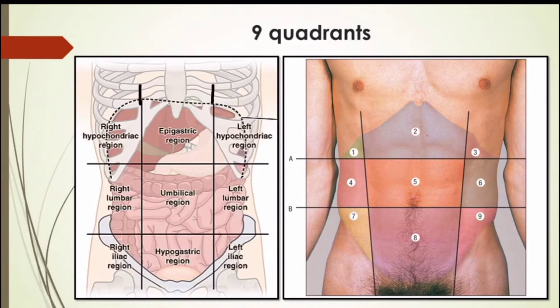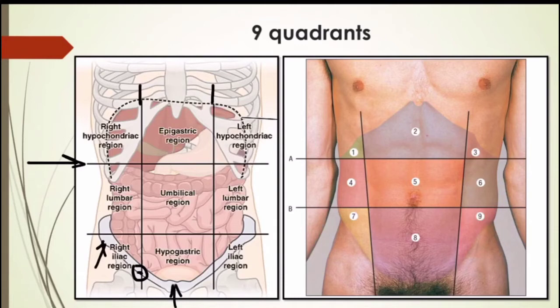The anterior superior iliac spine is here and the pubic symphysis is here, and the exact midpoint between the two is known as the mid-inguinal point — which you've seen in your lower limb studies. The same mid-clavicular line when traced downwards passes through the mid-inguinal point. The upper horizontal line is known as the transpyloric plane — it passes from the lower border of the L1 vertebra and also crosses several other structures.